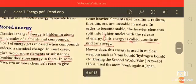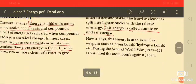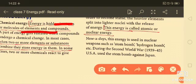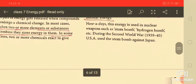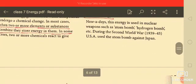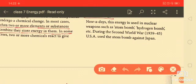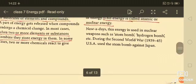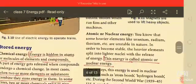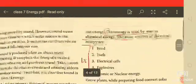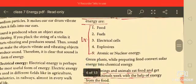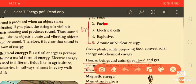Now, storage energy, the energy is hidden in atoms or molecules of elements and that energy that is stored in that is called the stored energy. In most cases, when two or more elements are combined, they store energy in them and in some cases, two or more chemicals react to give the energy. Now, this energy is used by man as chemical energy, the main sources of chemical energy are food, fuels, electrical cells, explosives, atomic or nuclear energy.